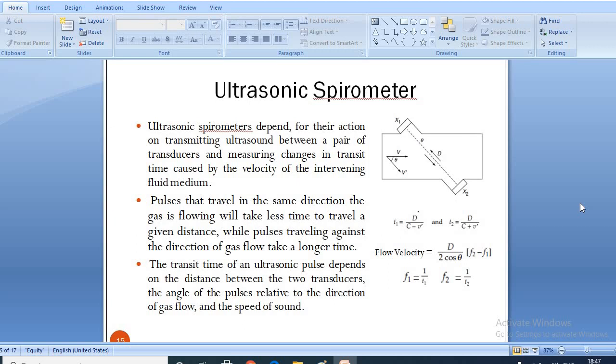The third type is ultrasonic spirometer. Ultrasonic spirometers depend for their action on transmitting ultrasound between a pair of transducers and measuring changes in transit time caused by the velocity of the intervening fluid medium. Pulses that travel in the same direction the gas is flowing will take less time to travel a given distance while pulses traveling against the direction of gas flow take a longer time.